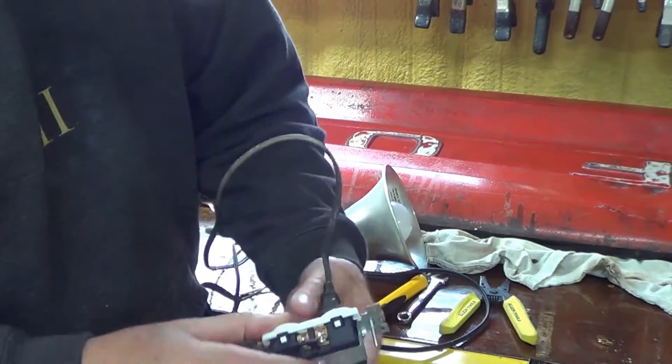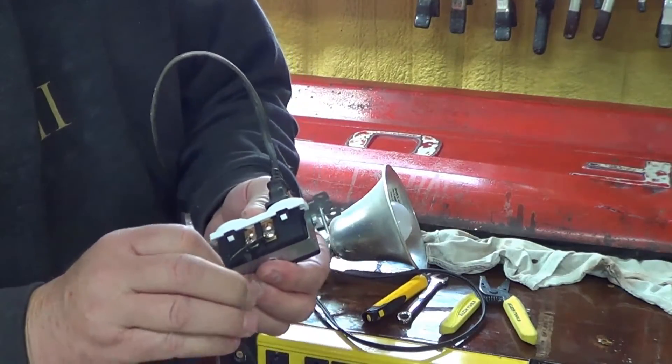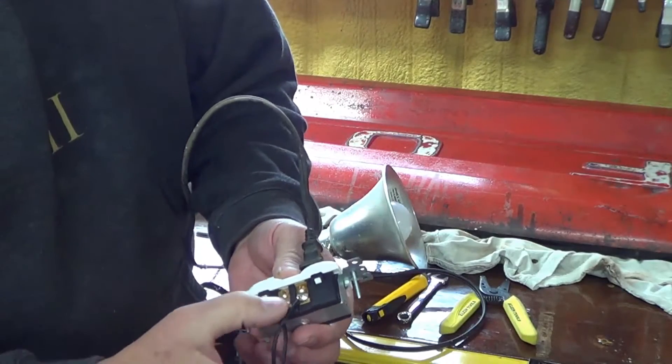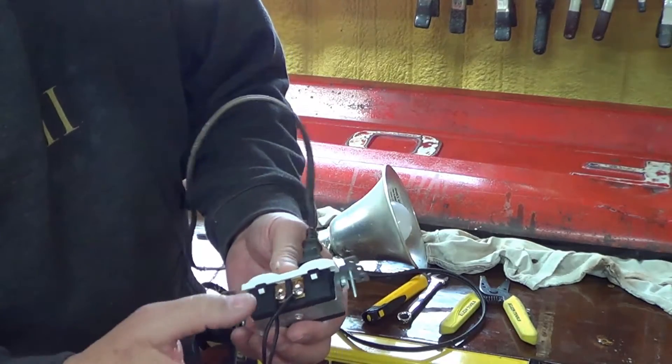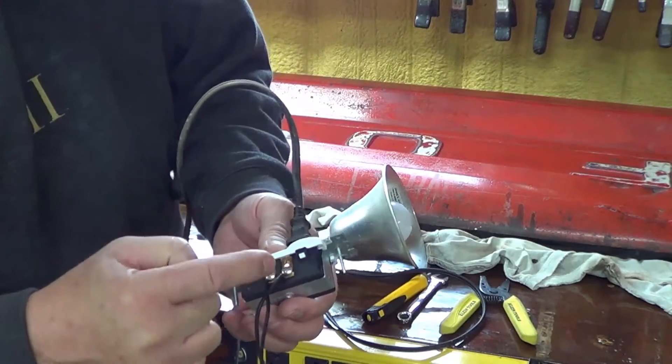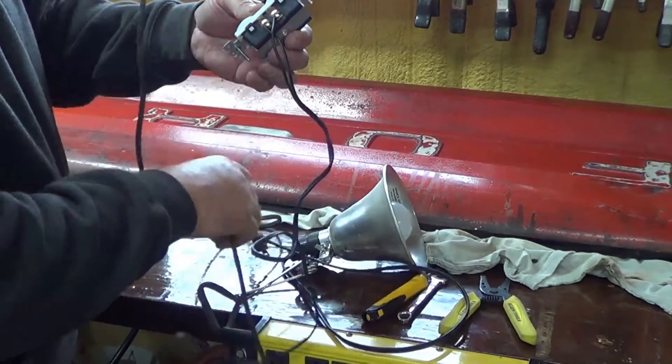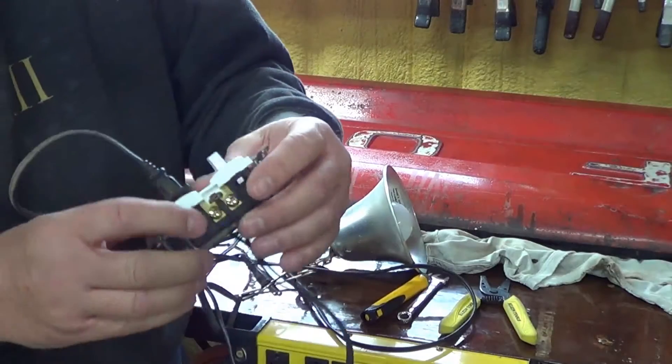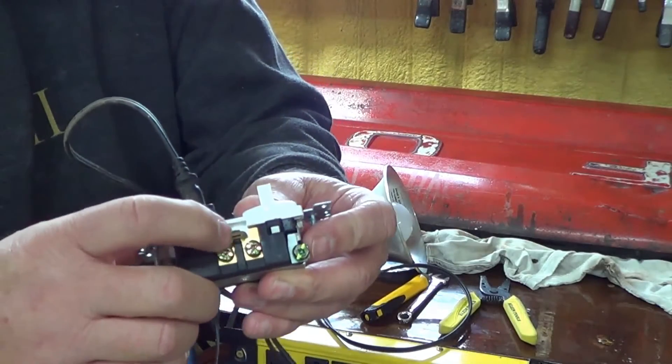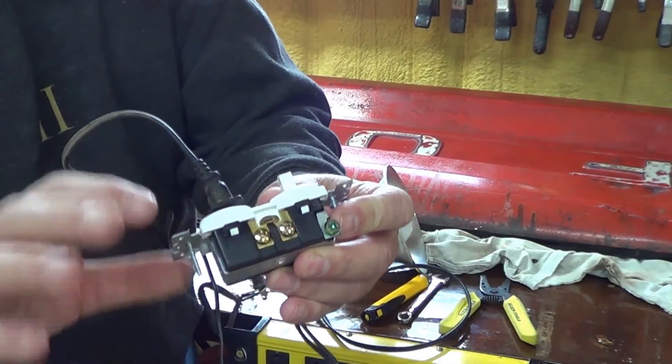Normally when you're wiring, your hot goes to the gold, brass, whatever you want to call it, and then the silver is where your white goes. So I want to try to figure out how do I make, because there's a little tab right here and if you break this tab you can make this always hot and a switch is different than the bottom.